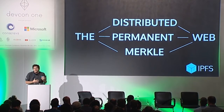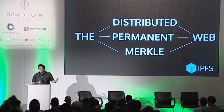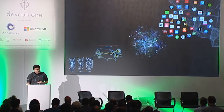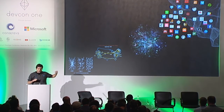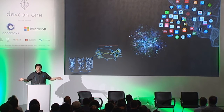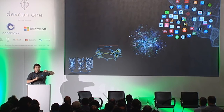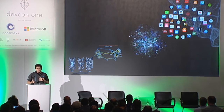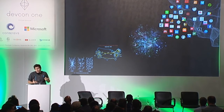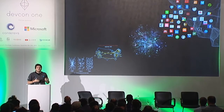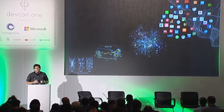So, IPFS — another name for it is the distributed web, or the permanent web, or the Merkle web, in honor of Ralph Merkle. And in a sense, it's this kind of evolution of how the internet and the web were structured. Everyone here, coming from blockchain history through Ethereum and a whole bunch of other interesting technologies, sort of see what's going on as this total reinvention of how to do distributed computing and distributed networks in general.